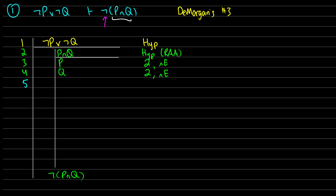In line 5, I want to assume ¬P as a new hypothesis for OR elimination. I want to show that I get a contradiction. In line 6, I'm going to reiterate P from line 3, since we know that's true based on our assumption. Now we have ¬P and P, which means in line 7 we can introduce a contradiction — from lines 5 and 6, this is contradiction introduction.